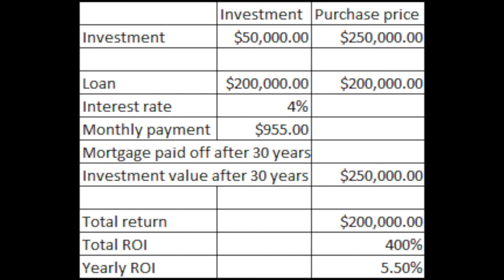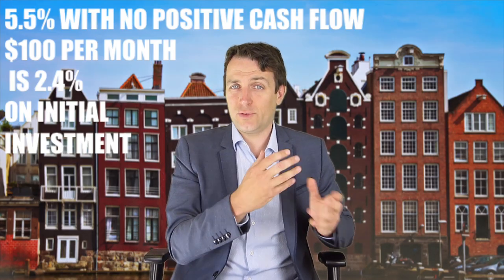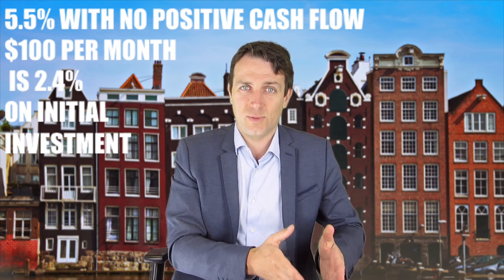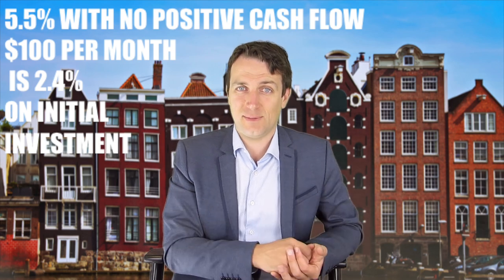I've made a small table here. Let's say I invest $50,000 as a down payment including costs. The purchase price is $250,000, the loan is $200,000, the interest rate is 4%, and the monthly payment is $955. I pay off my mortgage after 30 years. So what I get from my tenants, I pay my mortgage — no profit for 30 years. The total return on investment is 400% and the yearly return is 5.5% on my initial investment of $50,000. Now imagine making a small profit of 2% after costs — $100 remaining per month. That adds 2.4% per year to your return, because $1,200 is 2.4% on the $50,000 invested. So we're already at around 7-point-something percent.